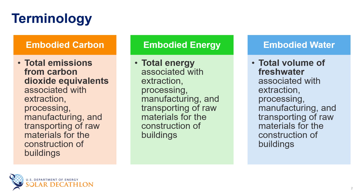And while less talked about, embodied carbon also includes the carbon footprint of a building after it reaches the end of its life. Carbon dioxide is not the only greenhouse gas associated with buildings. Therefore, embodied carbon is actually measured in carbon dioxide equivalents, which is a unit of measurement that standardizes the climate effects of different greenhouse gases. The emissions from other greenhouse gases are converted to carbon dioxide equivalents using the mass of the gas and the mass's global warming potential, or GWP.